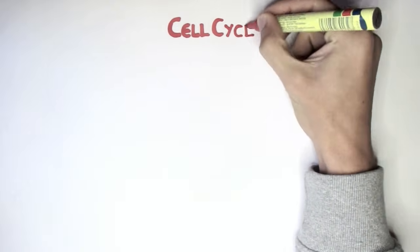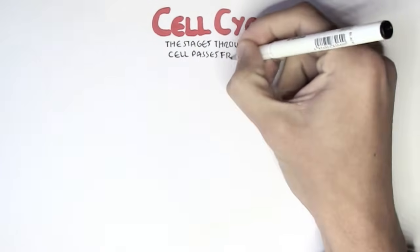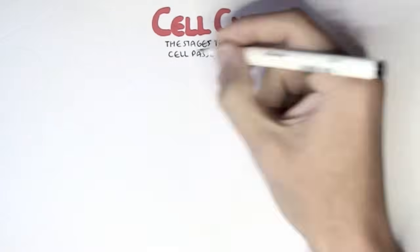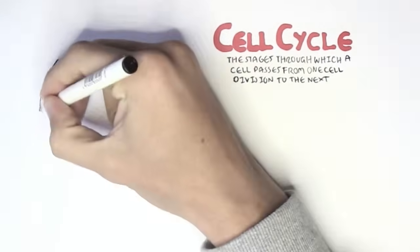Let's talk about the cell cycle. The cell cycle is defined as the stages through which a cell passes from one cell division to the next. It's the stages in which the cell grows and prepares for division, and when the cell divides, it divides into two identical cells. This is the cell cycle.